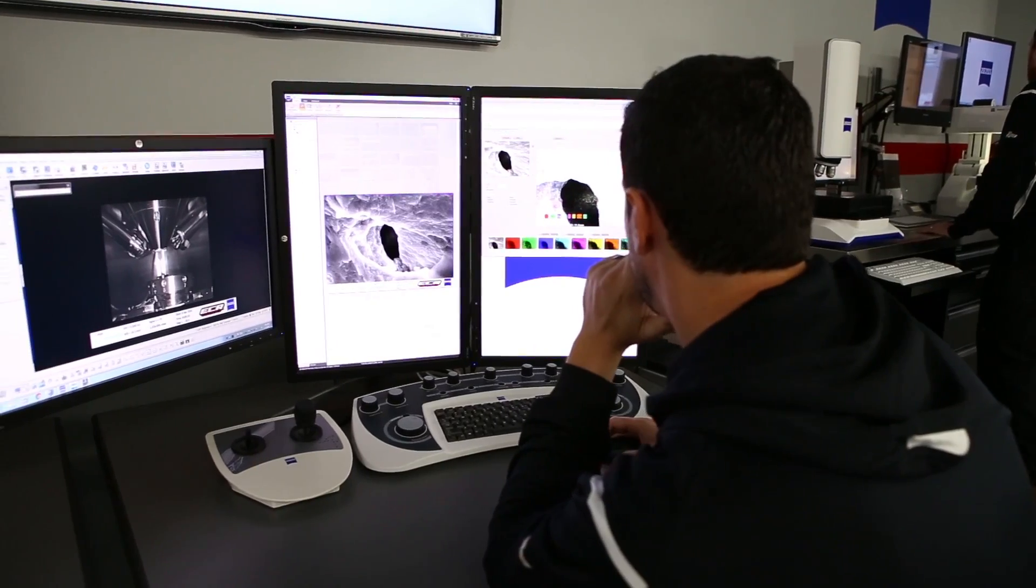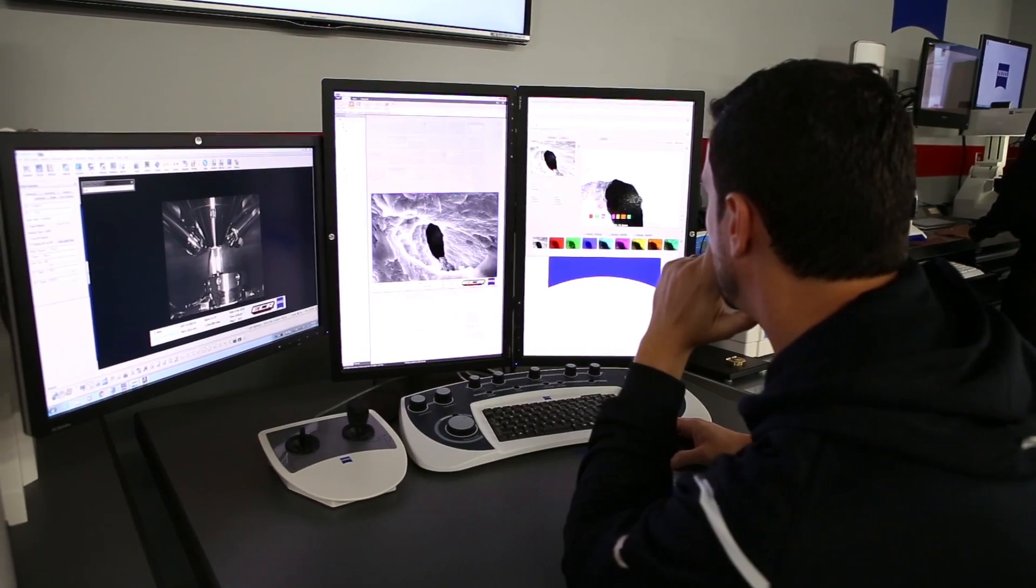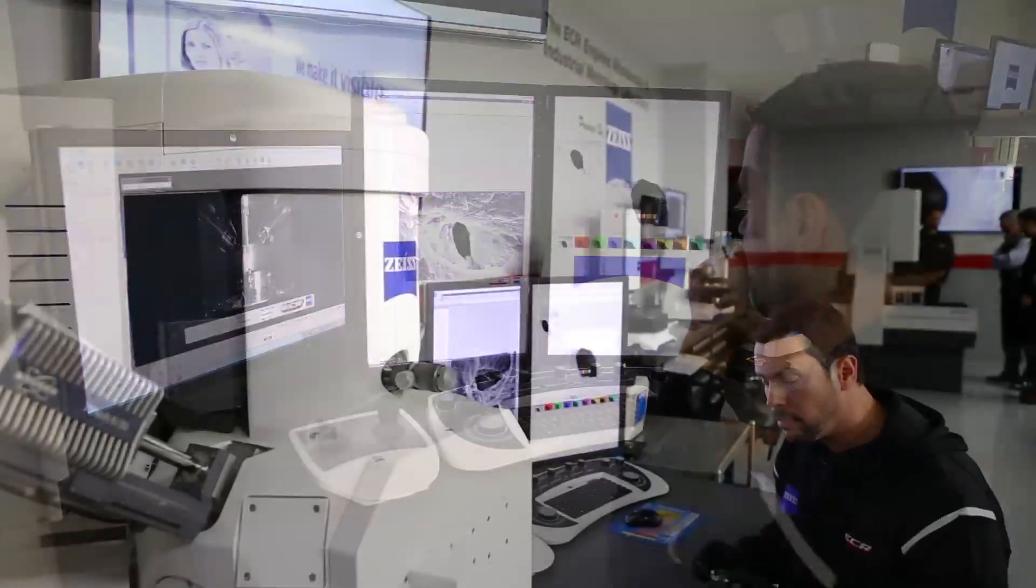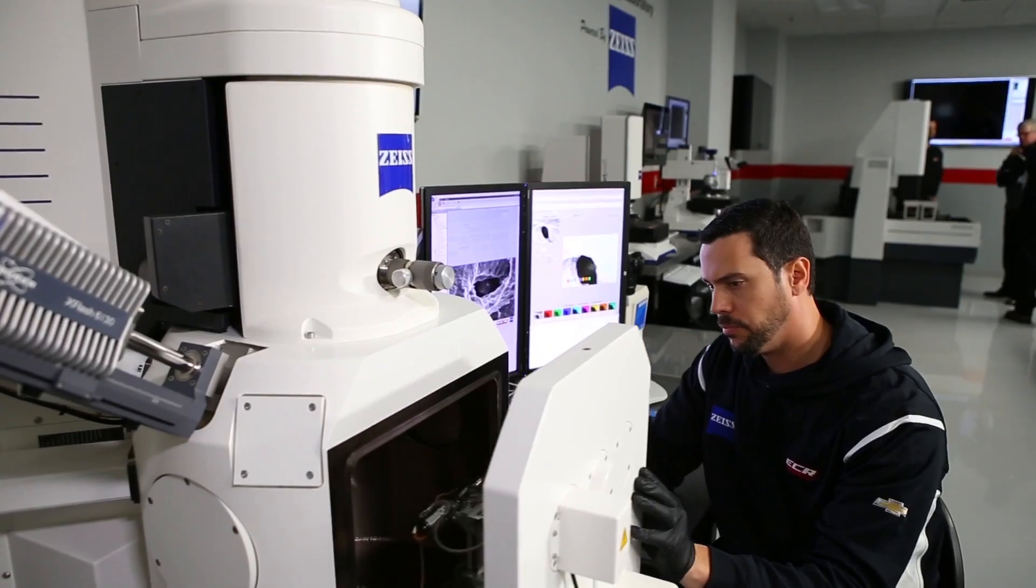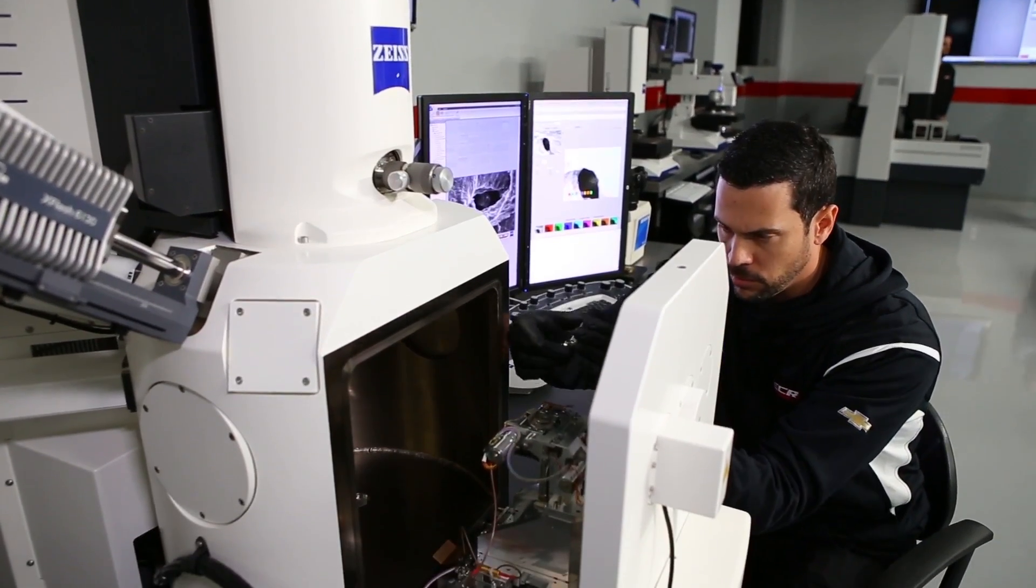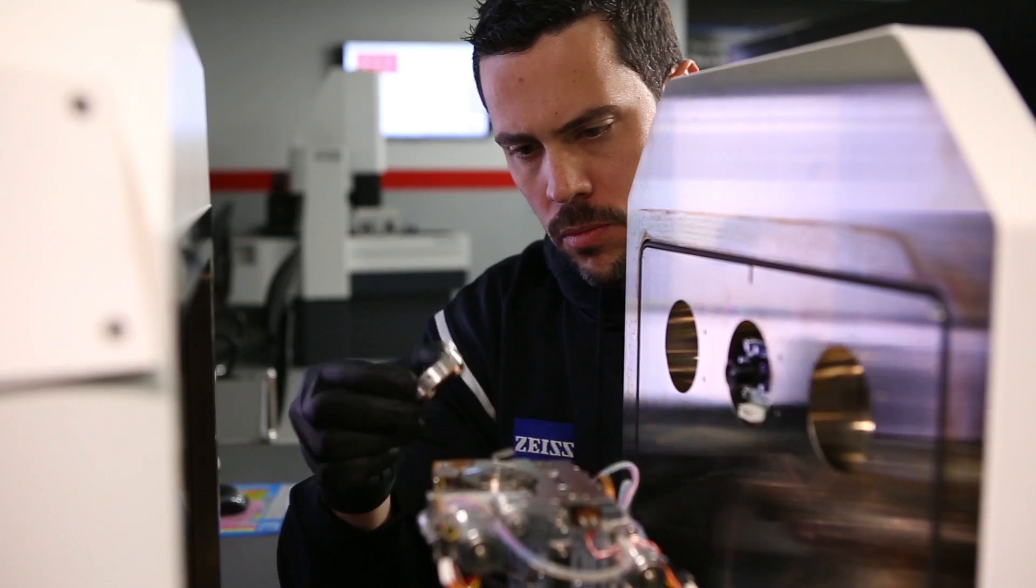Our EVO MA25 scanning electron microscope is primarily used for failure analysis and materials research. It's equipped with an energy dispersive x-ray EDX system for chemical analysis. We're using that with SmartPI for automated particle analysis of cleanliness of some of our engine components and oils.